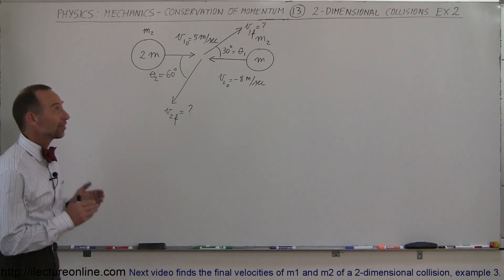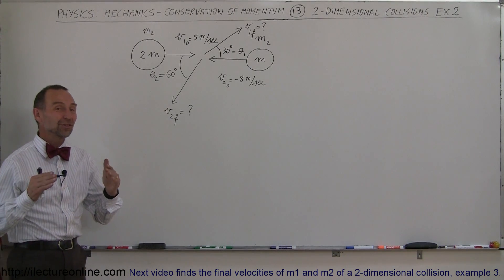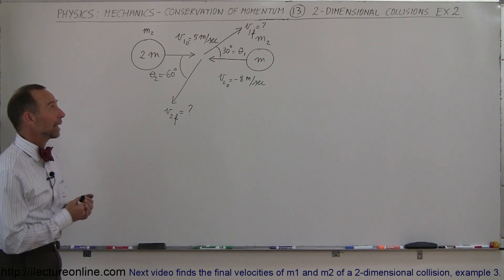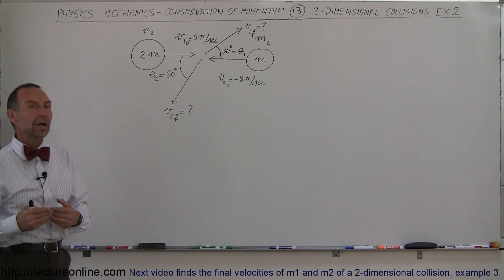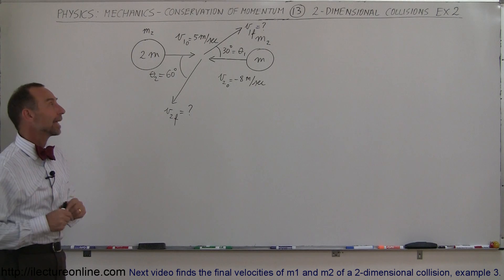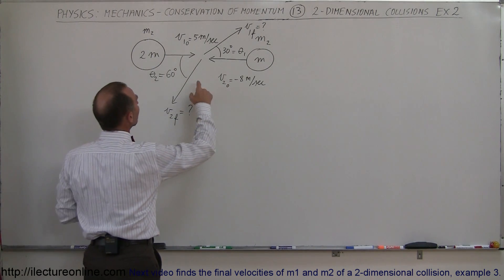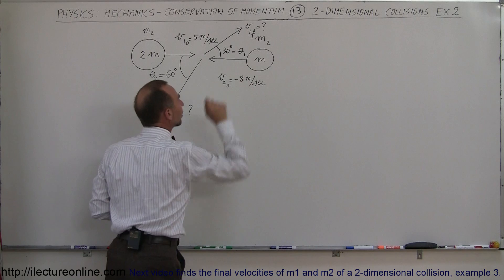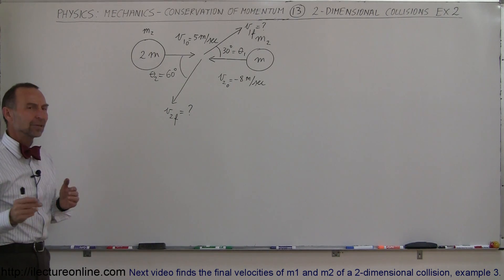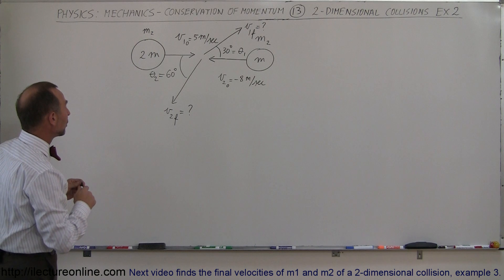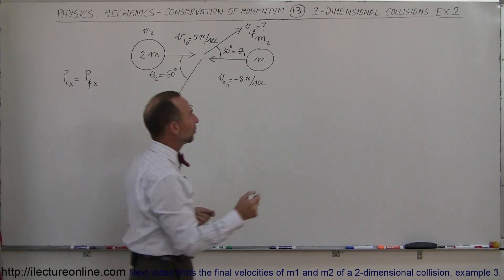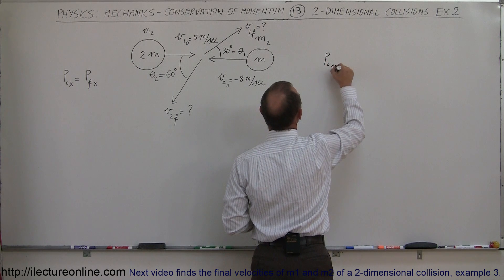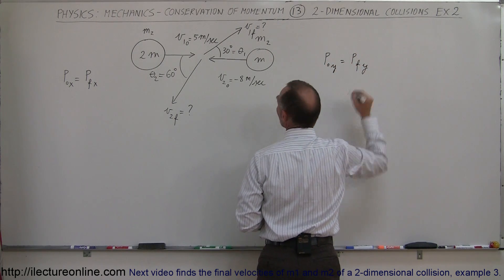Welcome to our online lecture. We're doing a second example of collisions in two dimensions, where conservation of momentum is at play. Whenever there are collisions, momentum is conserved in both the x and y directions. The two objects do not stick together; they're moving in opposite directions, and one mass is twice the size of the other mass. Momentum initial in the x-direction must equal momentum final in the x-direction, and likewise for the y-direction.